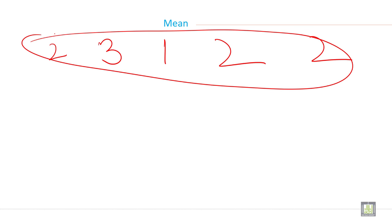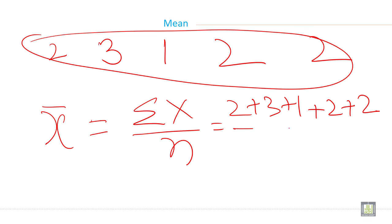So add all this data. The formula is x̄ equals Σx divided by n. So Σx is what? 2 plus 3 plus 1 plus 2 plus 2 and divided by how many it is? 1, 2, 3, 4 and 5. So it is 5.